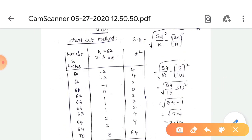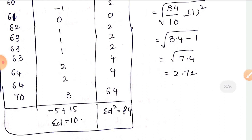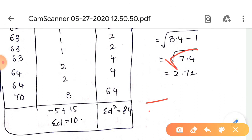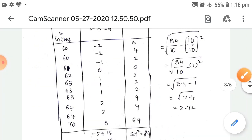Applying the shortcut formula: σ = √(Σd²/n - (Σd/n)²) = √(84/10 - (10/10)²) = √(8.4 - 1²) = √(8.4 - 1) = √7.4 ≈ 2.72. So the standard deviation by the shortcut method is 2.72.